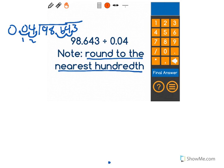I'm going to write this up at the top here to make it easier. Whole number will be four, and your new dividend will be 9864.3, and now you just have a normal long division problem that you could solve. So I'm going to solve this out.